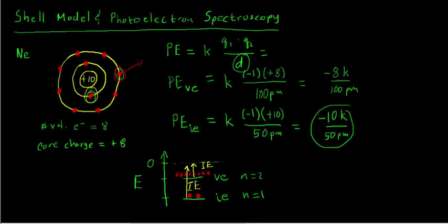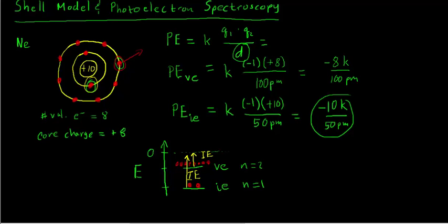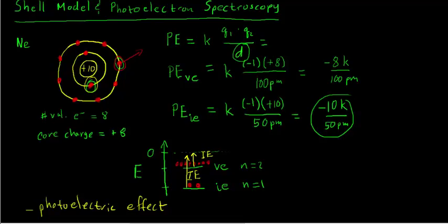Right now, the experiments we have talked about to measure first ionization energy only remove an electron from the outer shell. We need a different kind of experiment to remove electrons from any shell. That experiment is called photoelectron spectroscopy. We want to design an experiment that lets us ionize electrons from any shell of the atom. We're going to do this using a modification of the photoelectric effect, which was studied by Albert Einstein. That effect led him to conclude that light comes in tiny packets of energy — a smallest possible packet called a photon — giving light a particle-like nature.